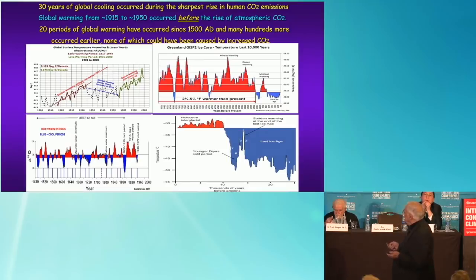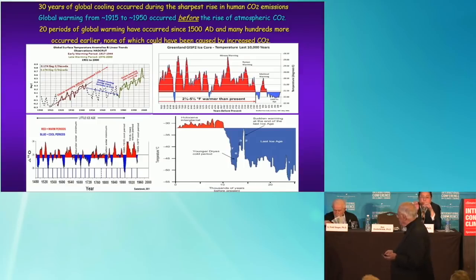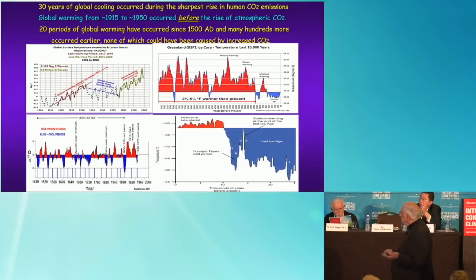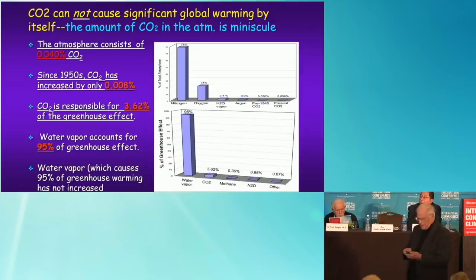Temperatures are about 2.5 to 5 degrees warmer than present in Greenland — with low CO2 — and then about 1,500 years ago we dropped into what has become the Little Ice Age. Going back even farther, 25,000 to 30,000 years — about 1,000 years into the last ice age — we see huge warming of 20 degrees in less than a century, and drops and rises of temperature of about 20 degrees in roughly a century, all without the benefit of CO2.